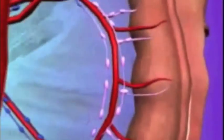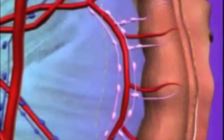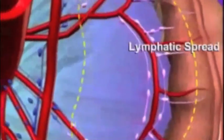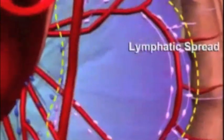Over a period of several years, a polyp has the potential to become cancerous. A cancerous polyp grows rapidly in size, eventually breaking through the wall of the colon and spreading through the tiny channels called lymph vessels.